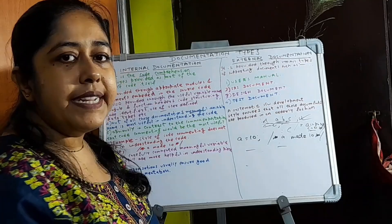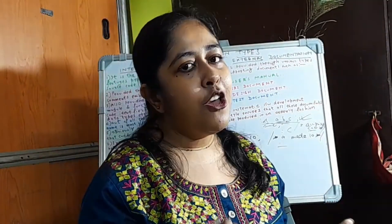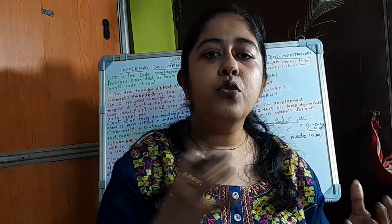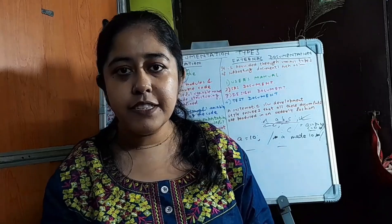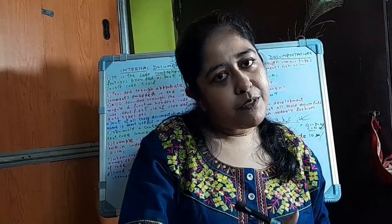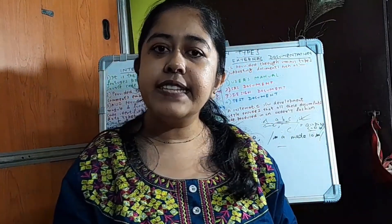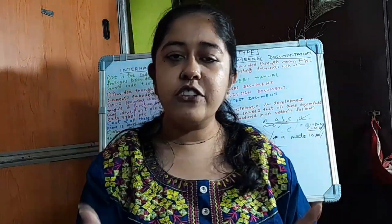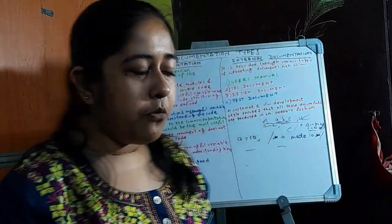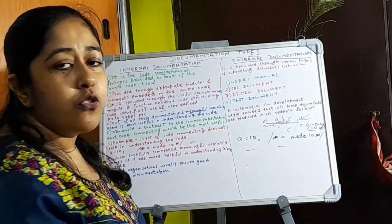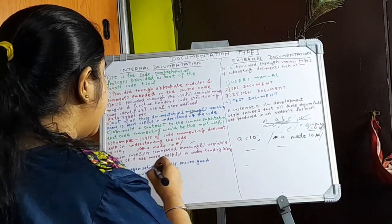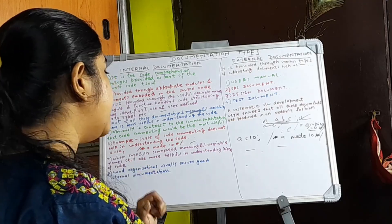Only code commenting is not useful. The common expectation is that for those who don't know a particular code — beginners — only code commenting is sufficient. But no. In contrast to this, the name of each variable should depend on its function, code structuring — everything is needed for a perfect internal documentation. Obviously, this kind of code commenting alone is not sufficient. When carefully commented, meaningful variable names are still more helpful in understanding a piece of code.